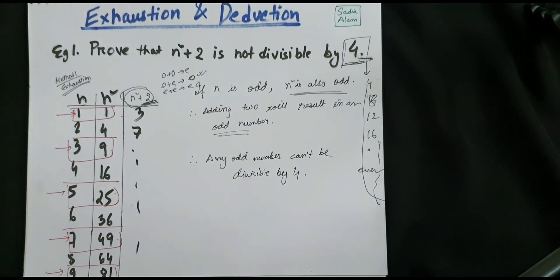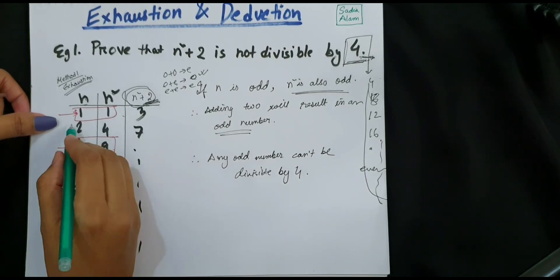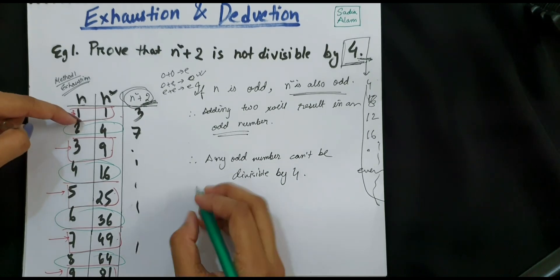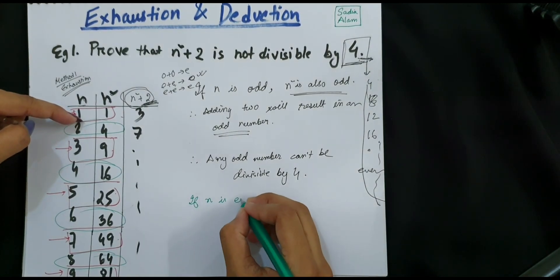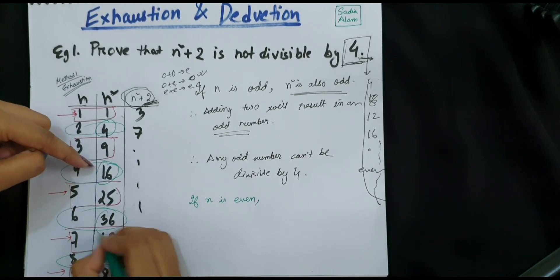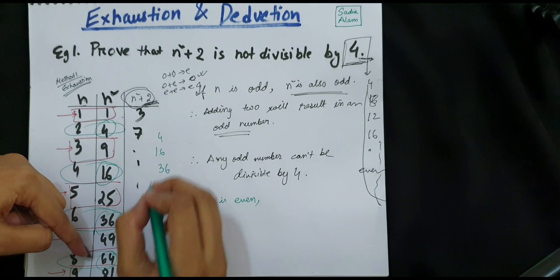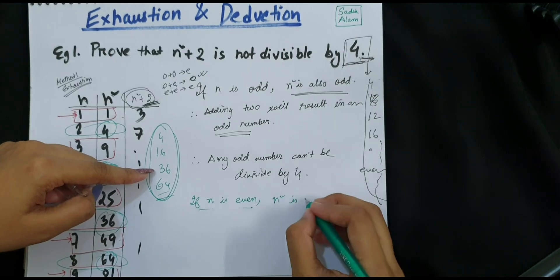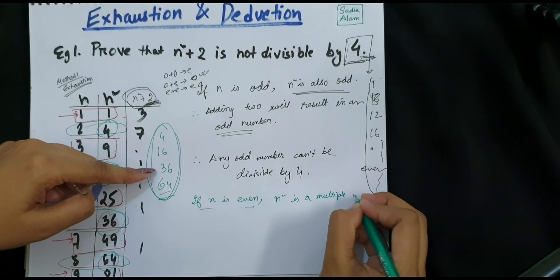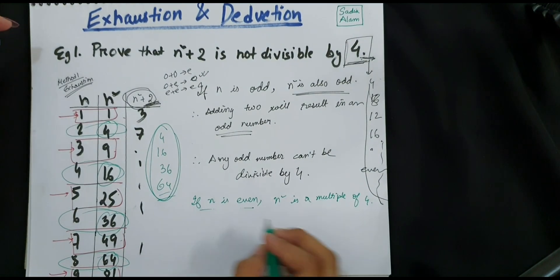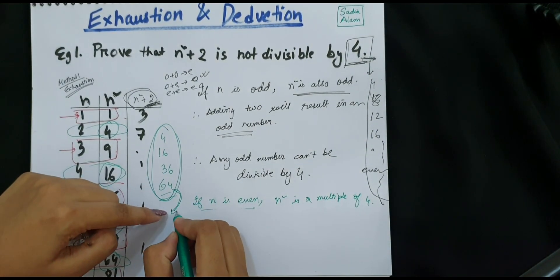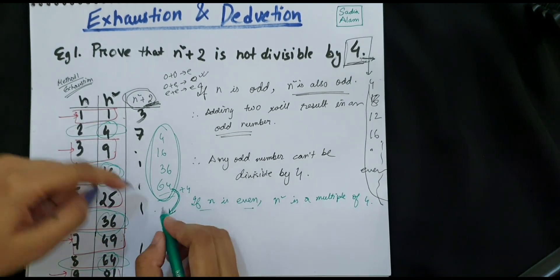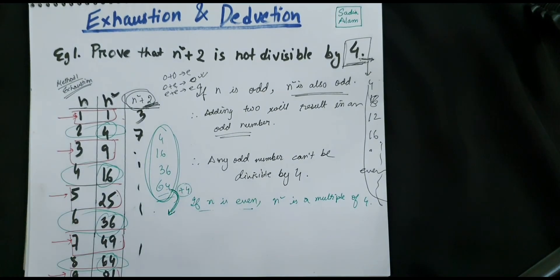Now if we take the even numbers: when n is 2, n squared is 4; when n is 4, n squared is 16. So when n is even, the results are 4, 16, 36, 64 — all multiples of 4. That is, when n is even, n squared is a multiple of 4. To get the next multiple of 4, we need to add 4.